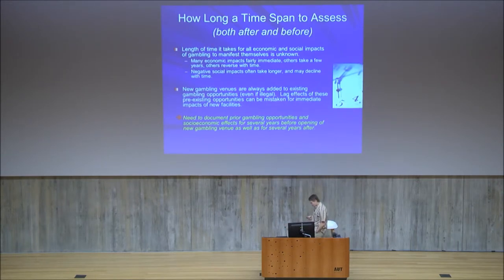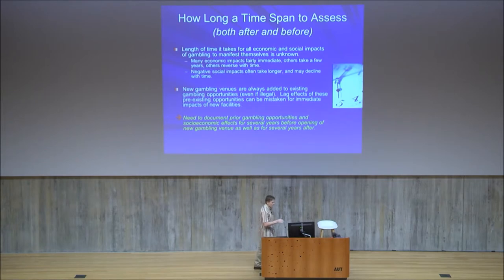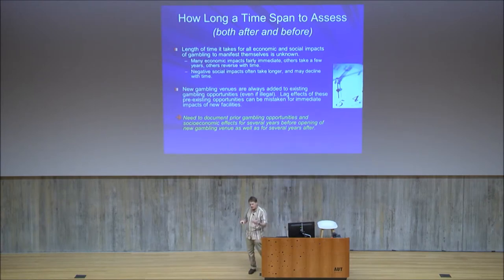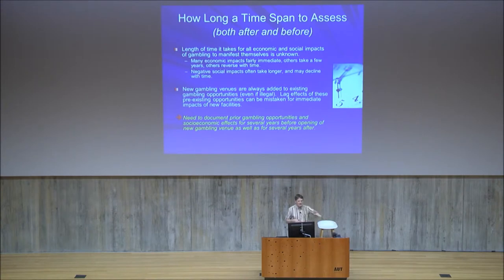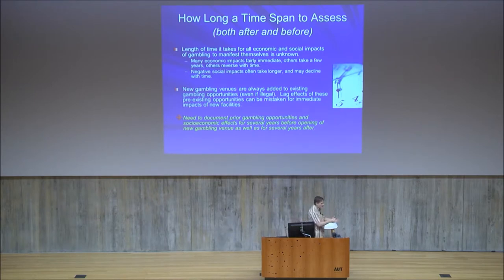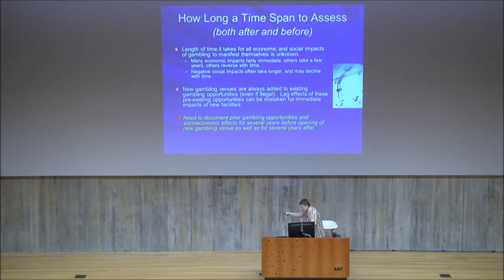Most economic activities add upon previous economic activities. New gambling venues are always added to existing gambling opportunities, even if illegal, and the lag effects of previous ones can be mistaken for the immediate effects of new ones. A good quality socioeconomic impact analysis has a long time span — many years before and many years after — because we know that social impacts of gambling often take many years to manifest themselves. If you have a circumscribed time window to assess impacts, you're artificially constraining the impacts that can be observed.